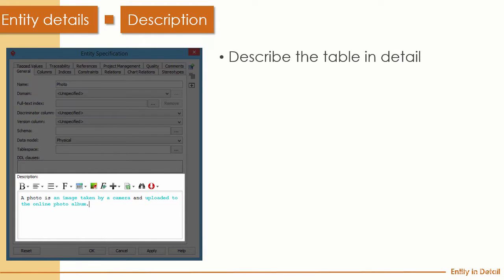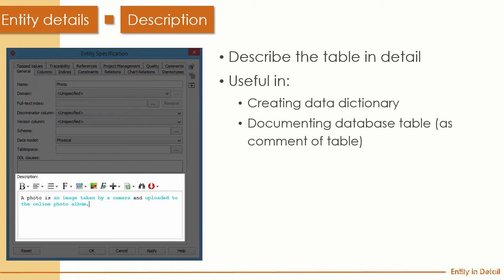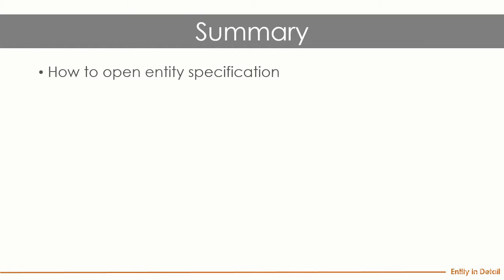Finally, the Description field is rich text used to describe the table in detail. The description text you write here is used in the generated data dictionary — a document for developers or database admins to understand the data structure. When someone looks at your table, instead of guessing by walking through each column, they can just read the description. To summarize: we covered how to open the entity specification and walked through the various properties available.